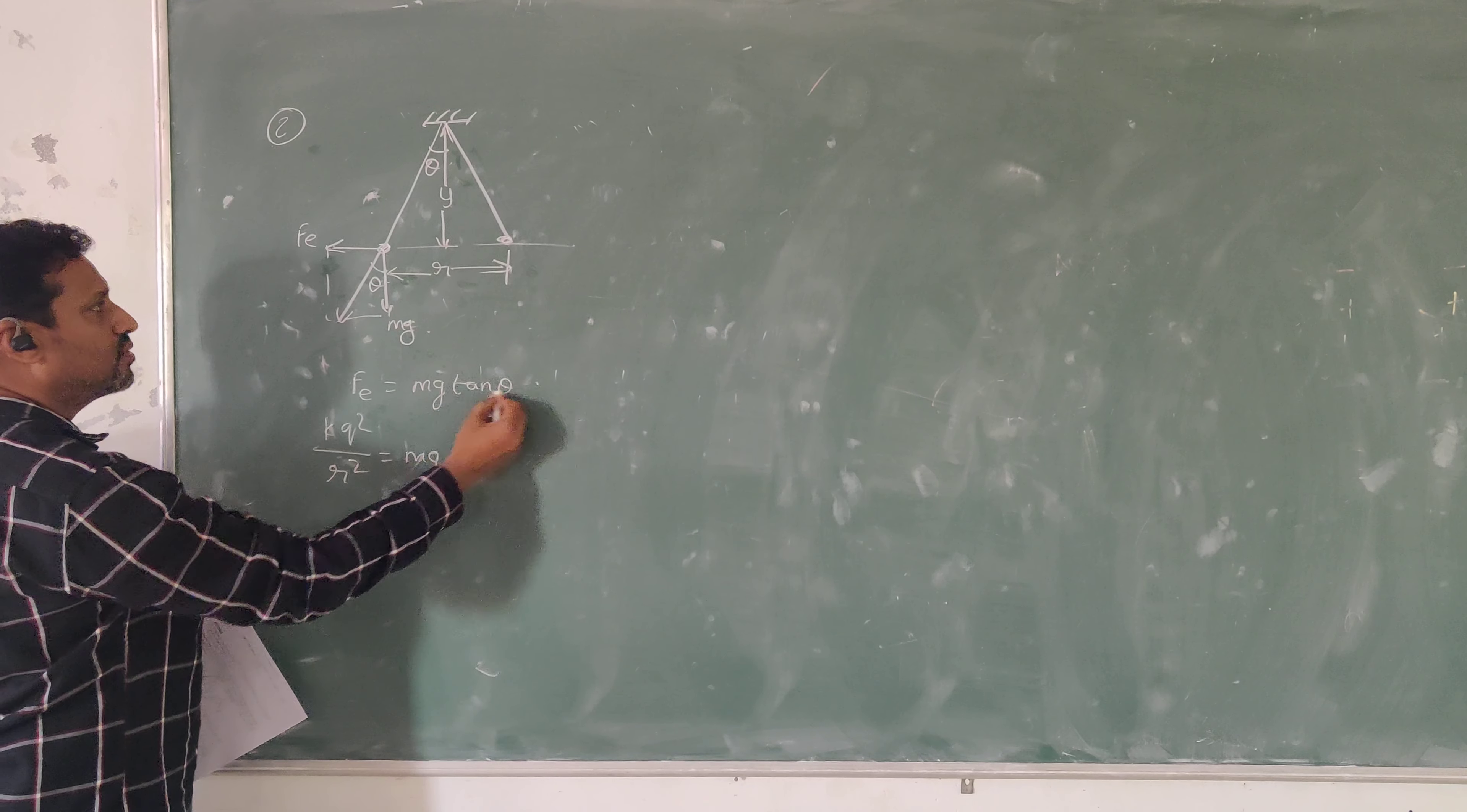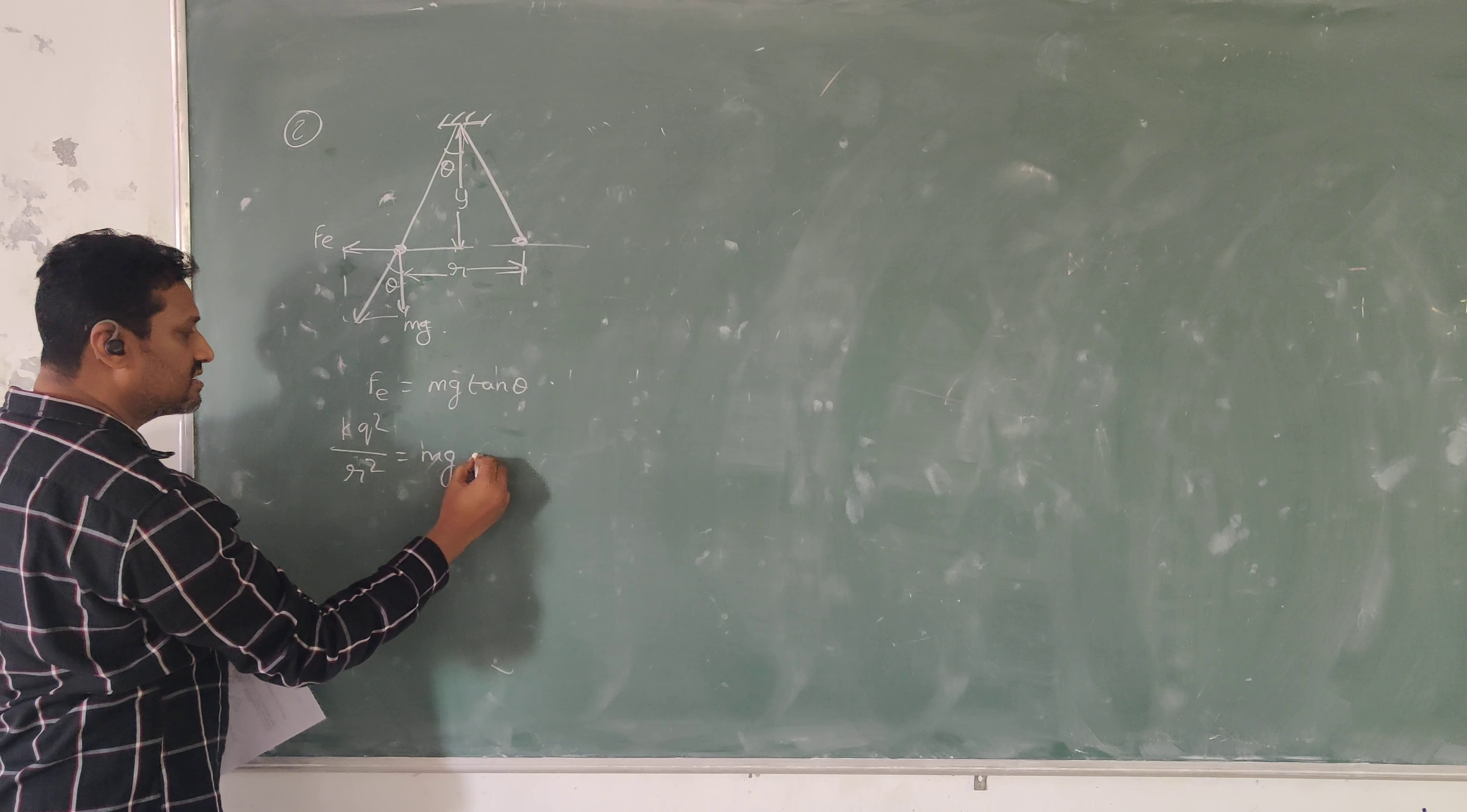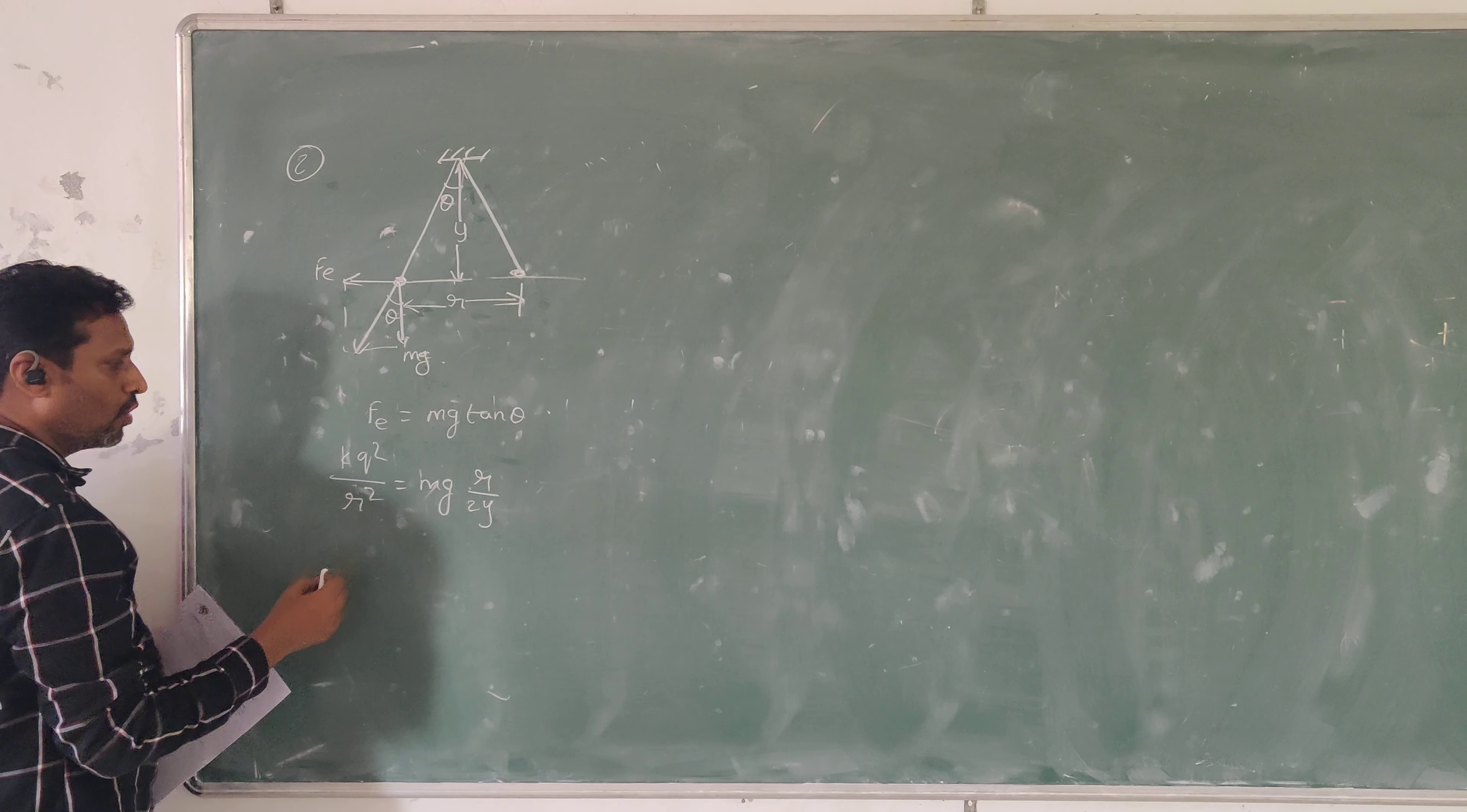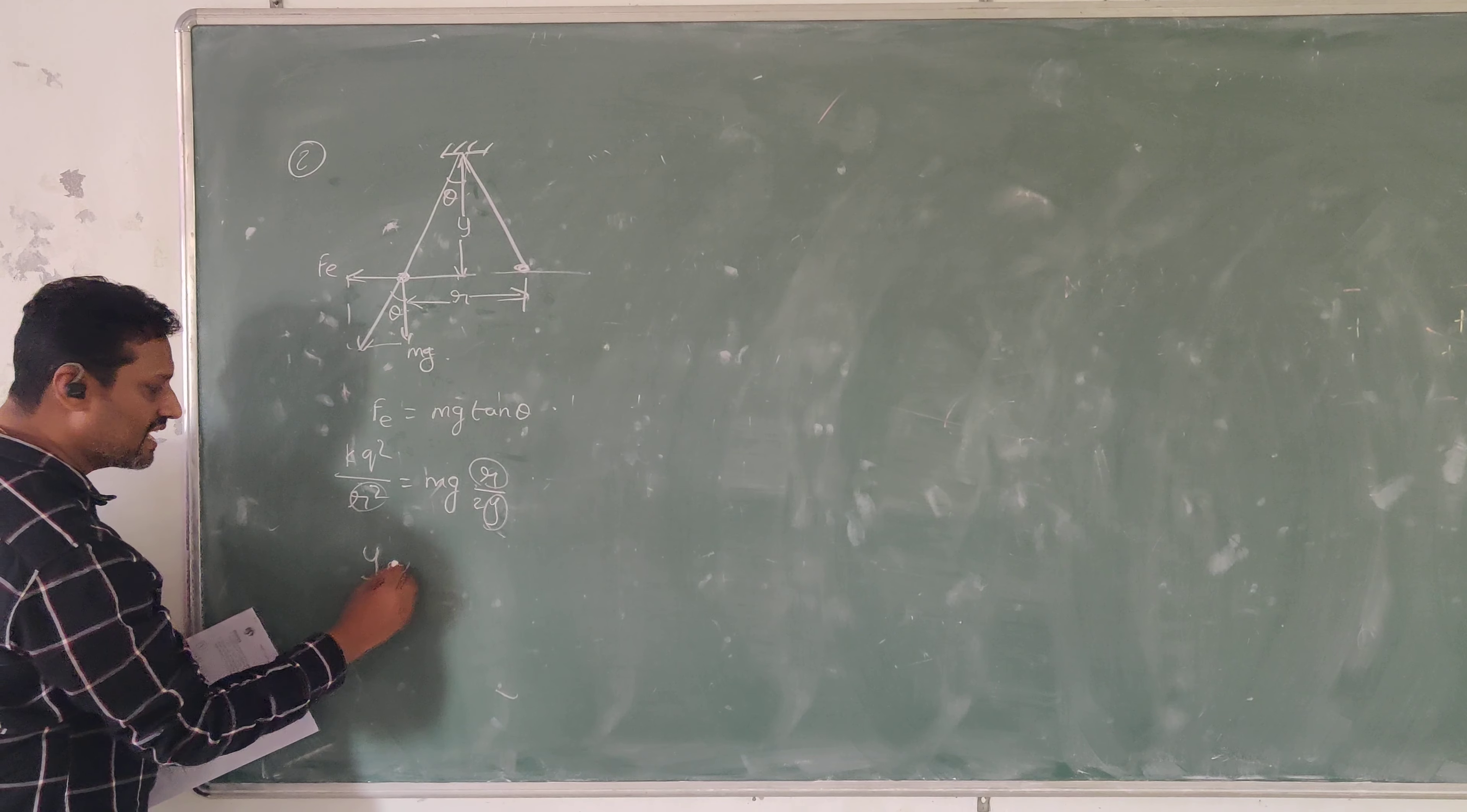Tan theta can be written as opposite side by adjacent side, that is r by 2y. So here the y and r relation will be established, so y is directly proportional to r over q. Now the point of suspension is changed to a point at a different height.